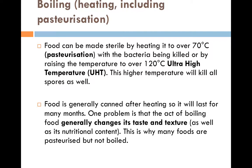Now we move on to boiling, which can include heating or pasteurization. When you heat a substance over 70 degrees via pasteurization, it will generally kill the bacteria. When you increase it to 120 degrees using ultra high temperature — UHT — this will kill all spores as well. Food is generally canned after heating, and this has an enormous impact in that food can actually be stored for many months and even years. One of the problems of boiling food is that you generally change its taste and texture, which from a marketing point of view affects sales, because people want the product as near to the original characteristics as possible.